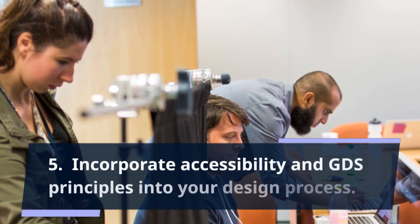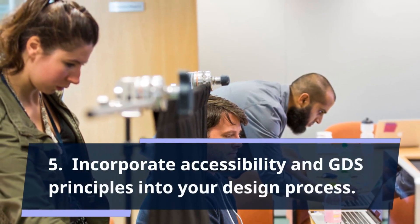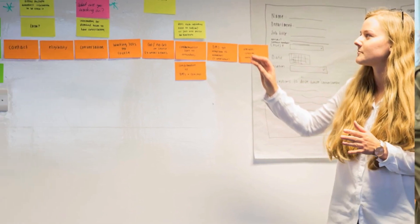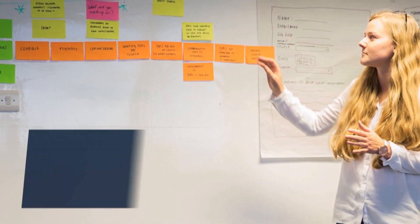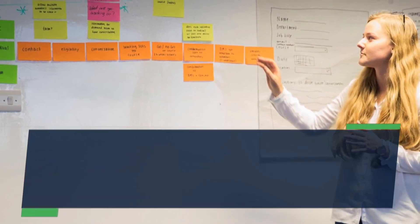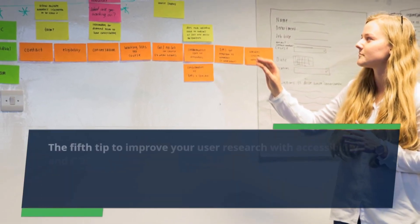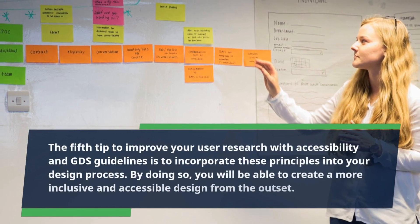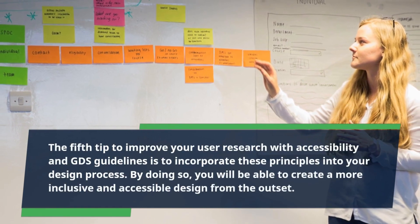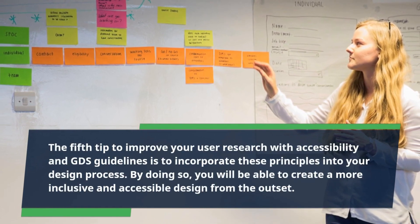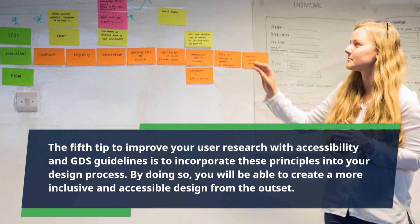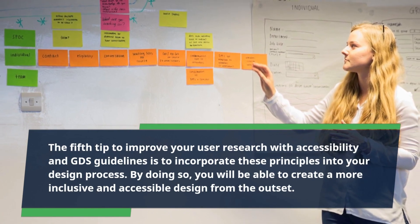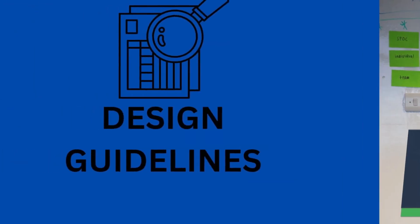Tip 5: Incorporate Accessibility and GDS Principles into your design process. The fifth tip is to incorporate these principles into your design process. By doing so, you will be able to create a more inclusive and accessible design from the outset.